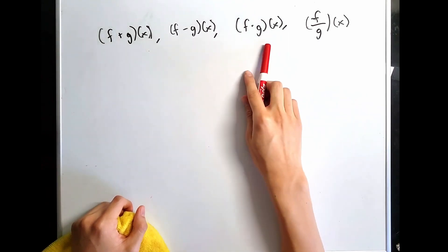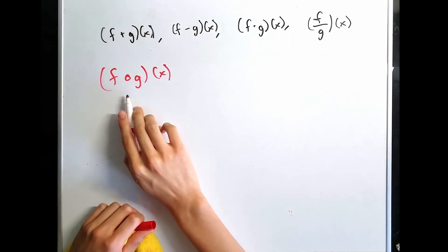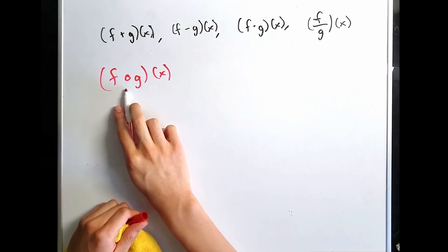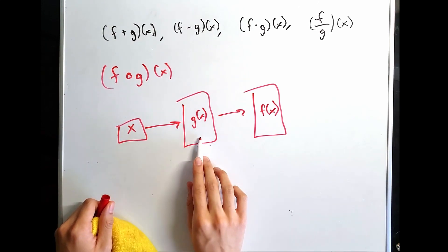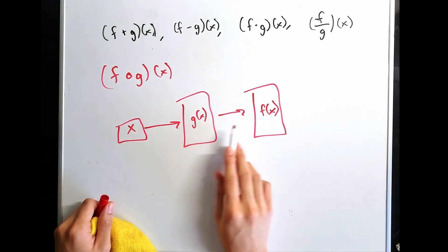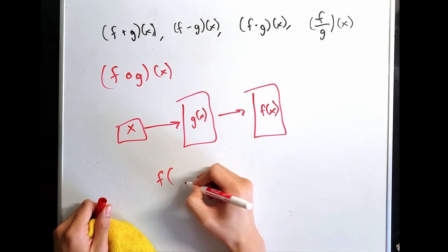With two functions, you can add them, subtract them, multiply them, or divide them. The composition of functions is denoted by an open circle. In the composition of functions, the x domain goes through g of x. g of x becomes the domain of f of x, and you take the function of a function.